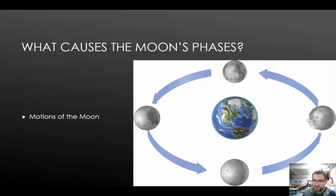Like Earth, the moon moves through space in two ways. The moon revolves around Earth, and it also rotates on its own axis. The moon rotates once on its axis in the same time it takes to revolve once around the Earth. Because of this, a day on the moon is the same length as a month on Earth. For this reason, the same side of the moon always faces Earth. As the moon orbits Earth, the relative position of the moon, Earth, and sun change. The changing relative positions of the moon, Earth, and sun cause the phases of the moon.